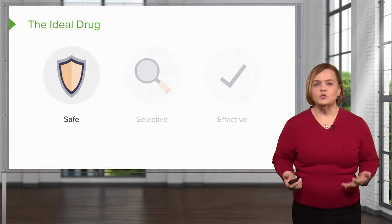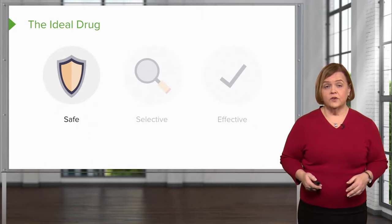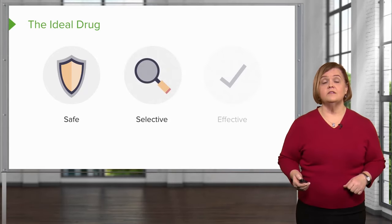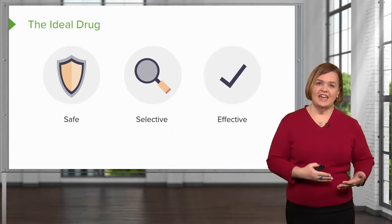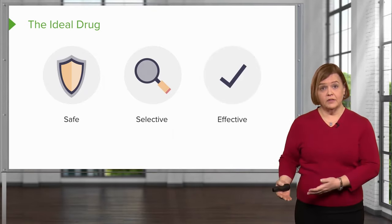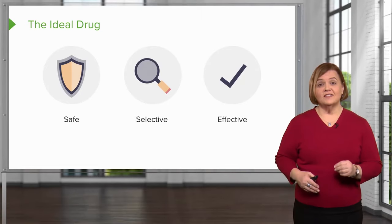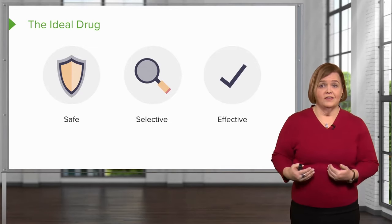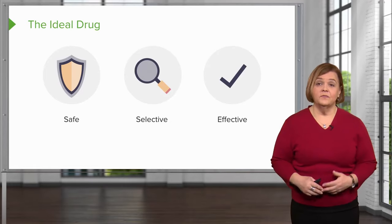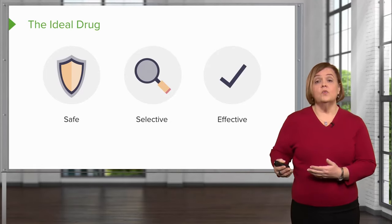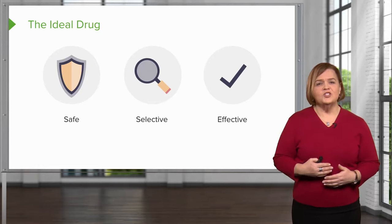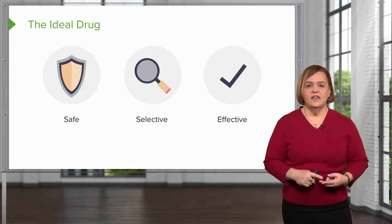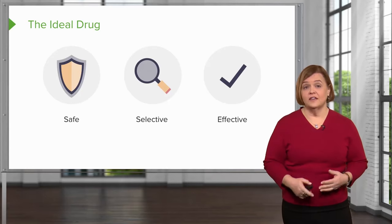So what do you think the ideal drug is? Well, there are three things that we look for. We'd like the drug to be safe, we'd like it to be selective, and we want it to be effective. When we say safe, nobody wants to take a drug that gives them more problems than benefits. We want it to be selective, like with antibiotics — we want them to kill the bugs and the bacteria, but we don't want them to kill the human cells. And we want it to be effective. If we take a drug to treat someone's high blood pressure, we want it to lower their blood pressure. So when you're just dipping your toes into pharmacology, think about: is this drug safe, is it going to be selective, and is it going to be effective for my patient?